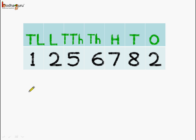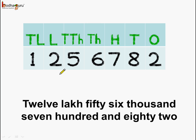So how can we read this number? Twelve lakhs, fifty six thousand, seven hundred and eighty two. So the number is twelve lakhs, fifty six thousands, seven hundred and eighty two. What did we do? We read the lakhs together, thousands together, and then hundreds and tens and ones. So this becomes very easy to read the number once we place it under the place value chart.